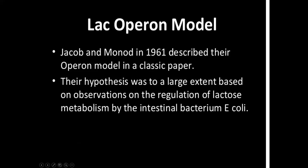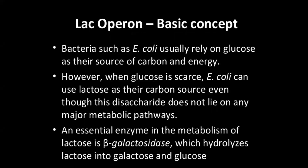Jacob and Monod in 1961 described their operon model in a classic paper. Their hypothesis was to a large extent based on observations on the regulation of lactose metabolism by the intestinal bacteria E. coli. When the lac operon concept was given in 1961 by Jacob and Monod, they described how this regulation occurs during lactose metabolism by the bacteria present in the intestine. Because there are many cistrons in it, that's why it is called polycistronic.